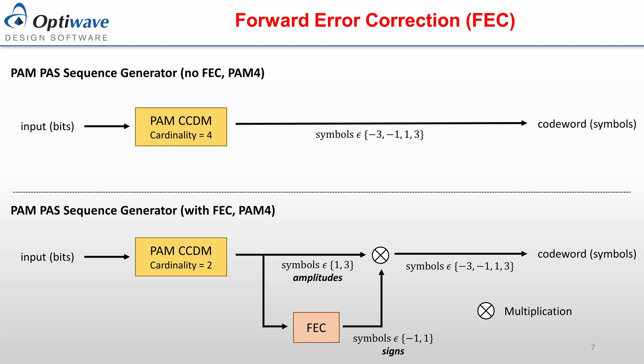For the probabilistic amplitude shaping technique, each branch of the QAM sequence generator can be shaped independently using a PAM-pass sequence generator component. When the symbols are read as a pair, the distribution on the right is attained. Forward error correction can be integrated into the PAM-pass sequence generator. The top figure displays the diagram of the generator without FEC, while the bottom displays the generator with FEC.